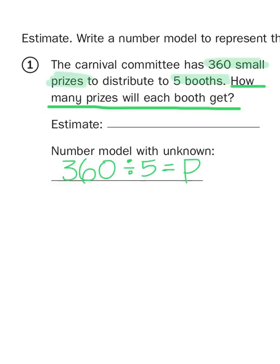Now, to come up with an estimate of how many prizes will go to each booth, I need to come up with a rounded number. 360 is a rounded number because it ends in zero, but I want one that's easily divisible by five. So I'm going to go with 350, otherwise known as 35 tens.